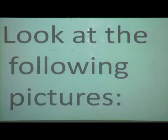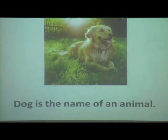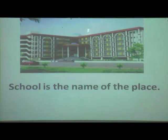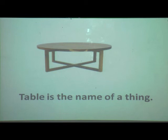Now look at the following pictures. This is our school — school is the name of a place. Who is she? This is a girl, her name is Preeti Sen — Preeti Sen is the name of a person. This is an animal — dog is the name of an animal. What is this thing? Table. So you have seen four things: school, person, animal, and thing. Whatever name is given to them — school, Preeti Sen, dog, and table — those names are called nouns.